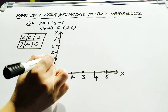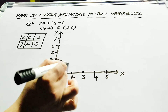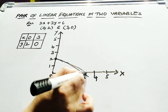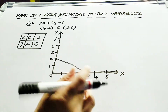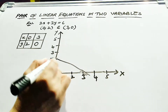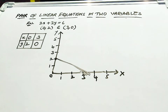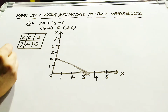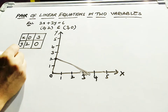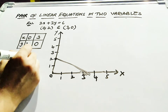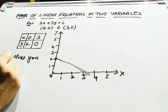Just join these dots. What do you observe? You will see that this kind of linear equation in 2 variables gives you a straight line.